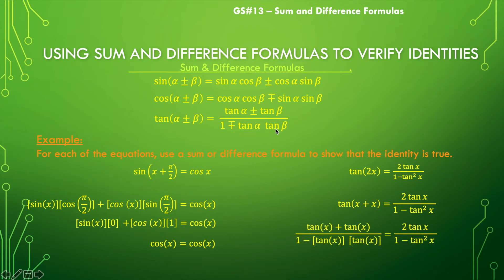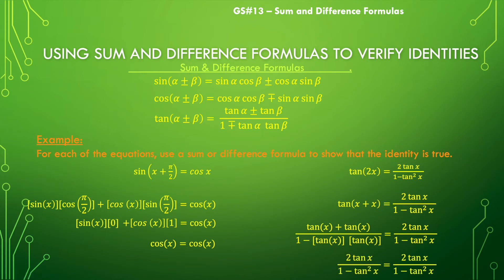Now let's combine like terms: tangent of x plus tangent of x is 2 tangent of x, and tangent of x times tangent of x is tangent squared of x. So I end up with 2 tangent of x over 1 minus tangent squared of x, which is exactly where I want to be.